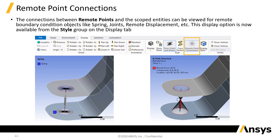Basically you can now visualize those spiderwebs before you do the analysis. And that's for any type of remote definition — remote connection, remote point, remote force, but also springs and beams — which are idealized types of connections that also use multi-point constraints in the background.